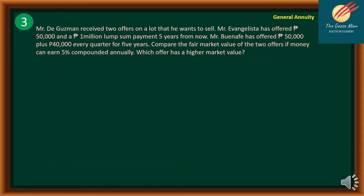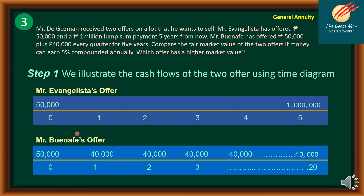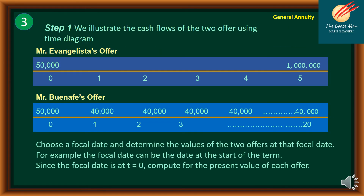Step number one: illustrate the cash flows of both offers using the time diagram. Mr. Evangelista's offer has a 50,000 pesos down payment and a 1 million pesos lump-sum after five years. Mr. Buenape's offer has 50,000 pesos now and a stream of 40,000 pesos every quarter. After illustrating the cash flows, we choose a focal date at t equals zero — the start of the term — and compute the present value of each offer.